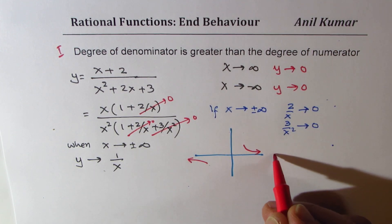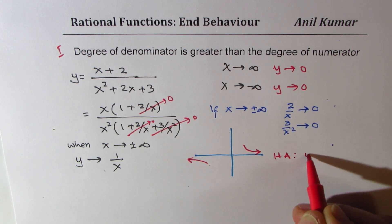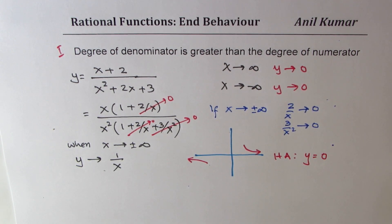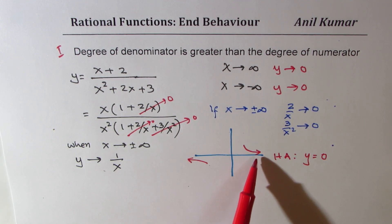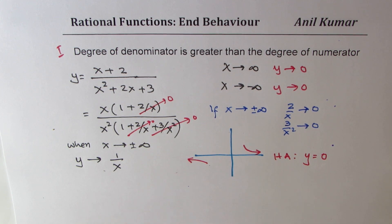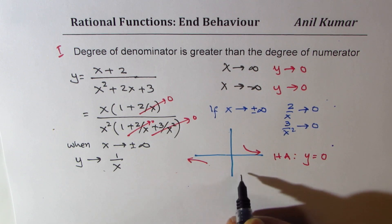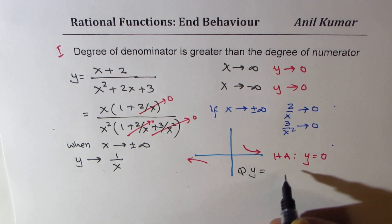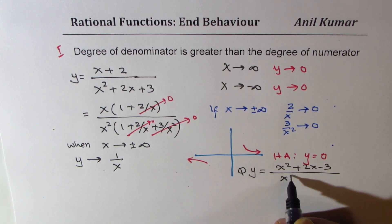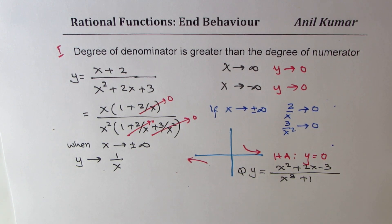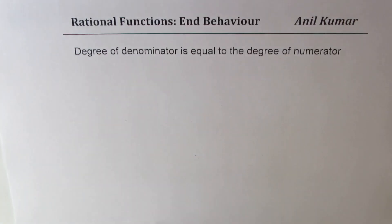So when X approaches positive or negative infinity, Y approaches 0, and the horizontal asymptote is y = 0. As a practice question, try finding the end behavior for y = (x² + 2x − 3)/(x³ + 1), where the degree of the denominator is greater than that of the numerator.